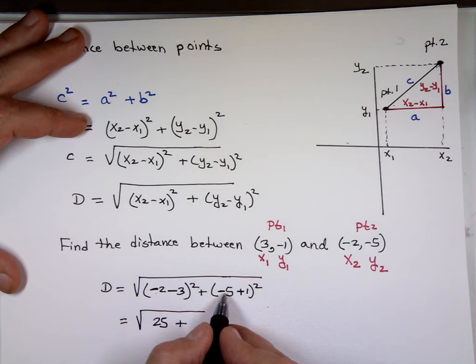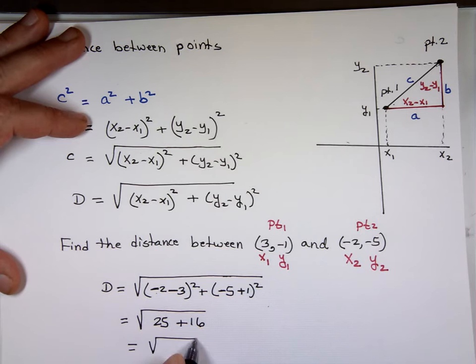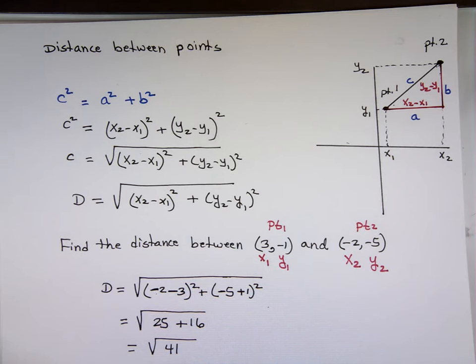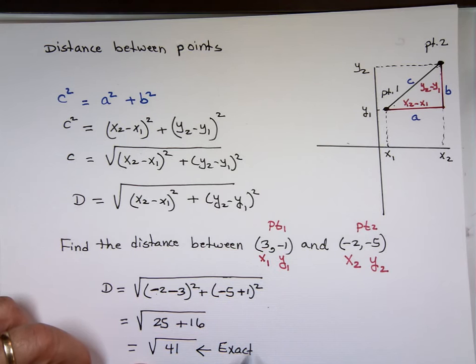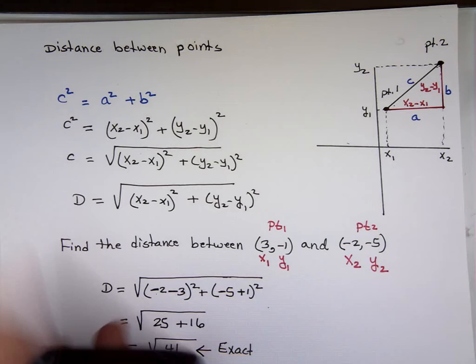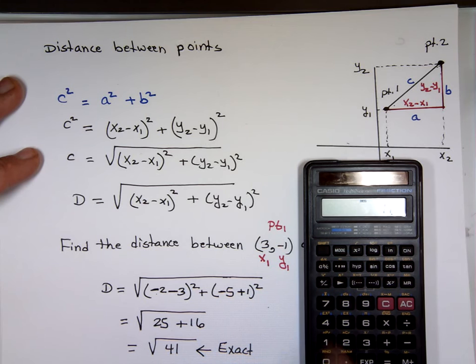So the answer is the square root of 41. If it says give the exact answer, that is your exact answer — leave it the way it is. If it says simplify or round to 3 decimal places, then you go to your calculator. Hit 41 then the square root: 6.403.